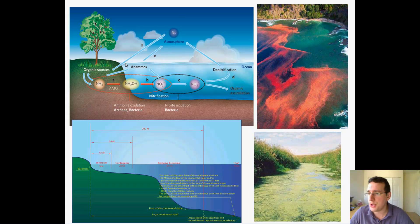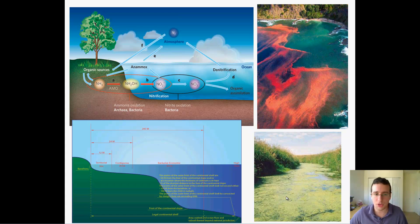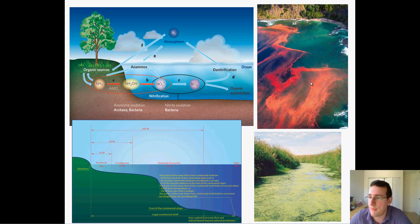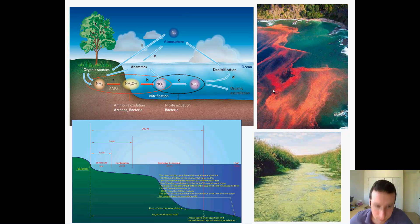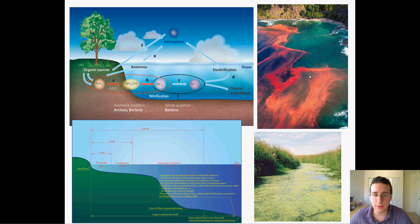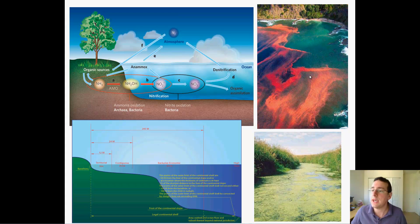What happens is that the algae now has everything it needs to reproduce faster, and you get an algae bloom — a growth of algae that covers the surface of the water, effectively killing anything underneath. One very bad type of algae is called red algae, which can cause red tide. It's toxic and will kill all the life forms in that area. This is basically caused by excessive nutrient enrichment, a process called eutrophication of the water.